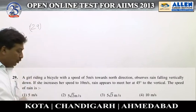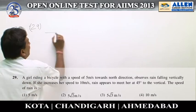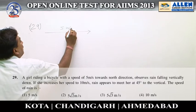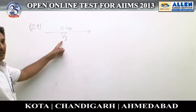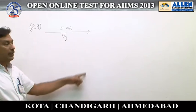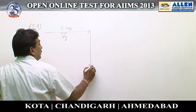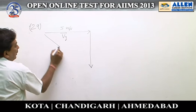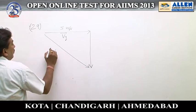Question number 29. The speed of the girl is given as 5 meters per second. To the girl, it appears that the rain is falling vertically downwards. That is the actual velocity of rain, v_r.